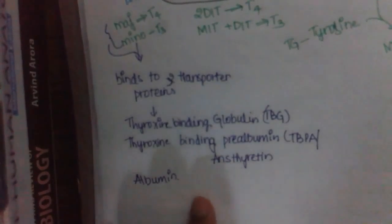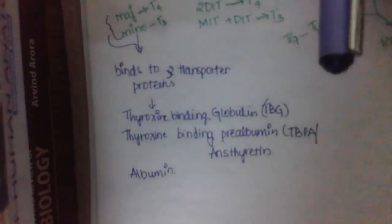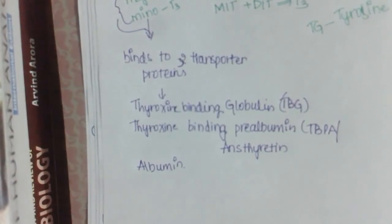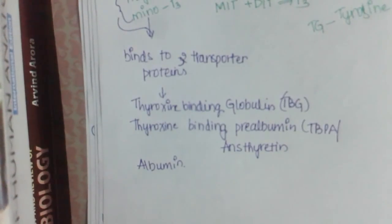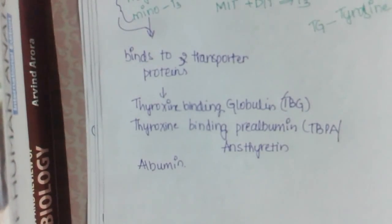These three transporter proteins carry the thyroid hormone to their target sites. All three plasma proteins take thyroxine from one place to another. The importance of protein binding is: first, these proteins act as a reservoir for these hormones; second, this protects the hormone against metabolic degradation, decreasing T3 and T4 degradation.